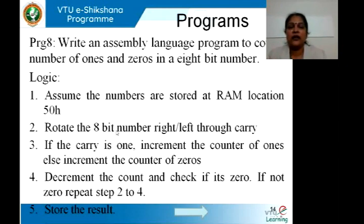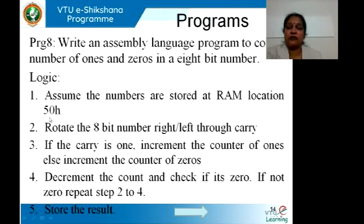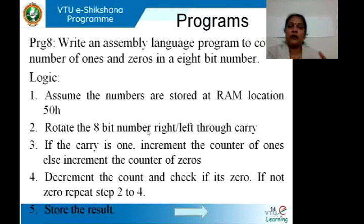If you fix the value in the program, every time you need to exit debug mode, change the number, and re-test. By keeping data in RAM, this is avoided. The logic: the 8-bit number at location 50H is rotated right or left through carry. If a carry is generated, that bit is 1, so increment the register holding the count of 1s; otherwise increment the register holding count of 0s. Repeat this for all 8 bits.